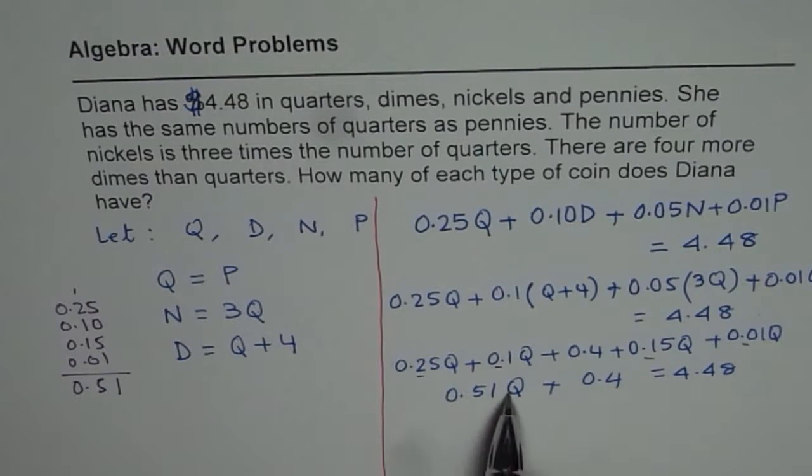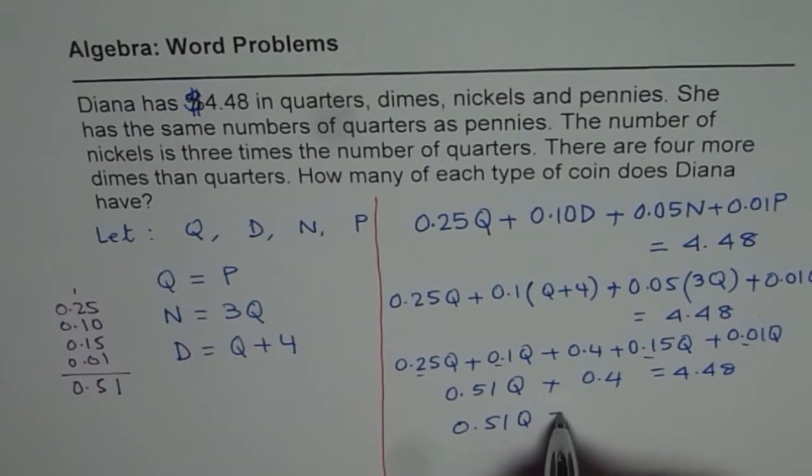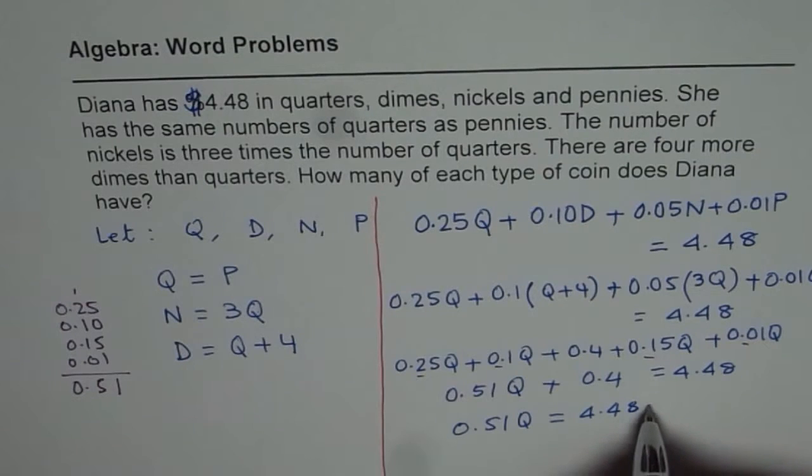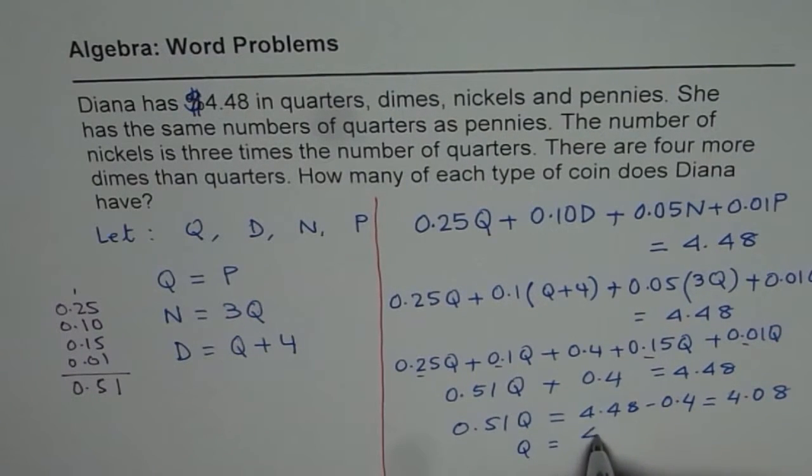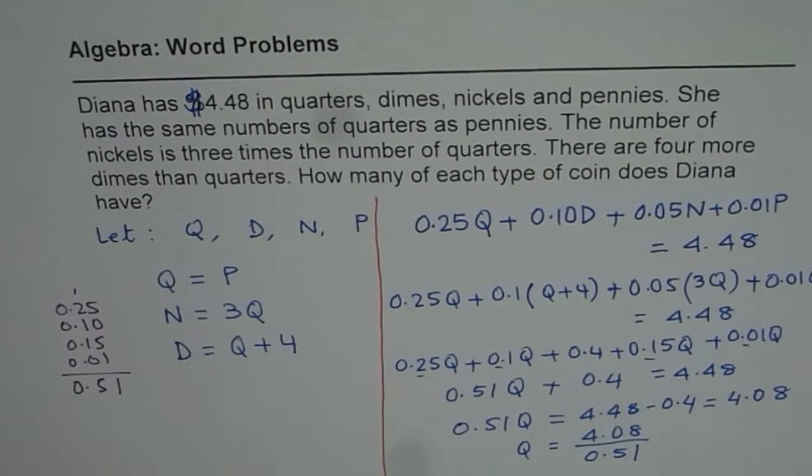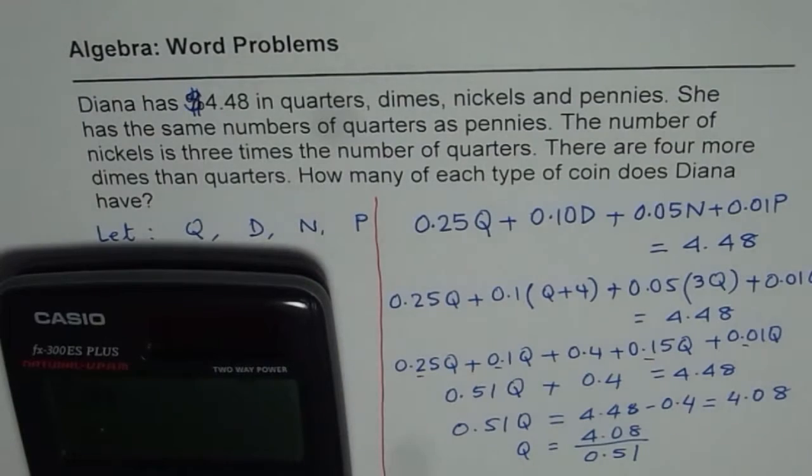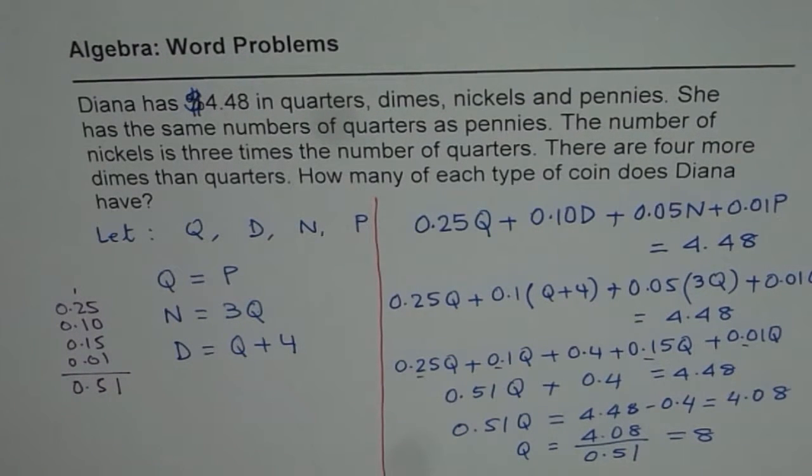Now we have an equation with one variable. We can solve for quarters now. So we can write here 0.51 quarters is equals to 4.48 minus 0.4 which is 4.08. Now quarters is 4.08 divided by 0.51. So at this stage we can take the calculator. Divide 4.08 by 0.51, and the number is 8 for us.